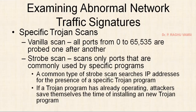The vanilla scan is done especially to know what are the active and live open ports. Next is a strobe scan — scan only ports that are commonly used by specific programs like web services or FTP services. A common type of strobe scan checks IP addresses for the presence of a specific Trojan program. If a Trojan program is already operating in the system, then attackers can save themselves the time of installing a new Trojan program. Someone asked in the previous lecture how to know the IP address of a computer in the internal network — via social engineering methods, one may create a Trojan program and wrap it with an original genuine application.